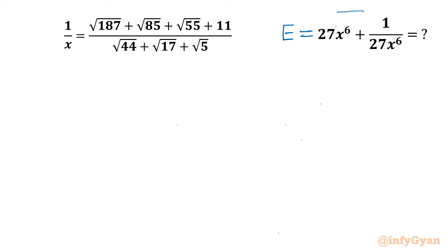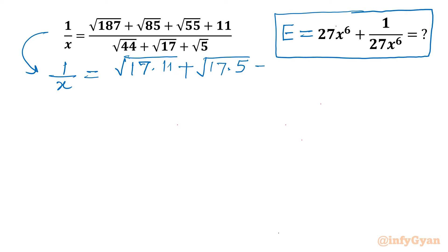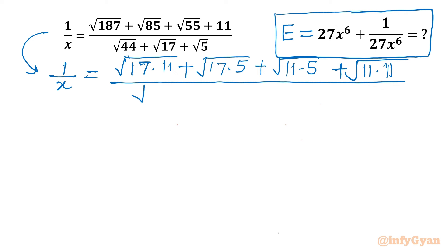Let me call it E, and the given equation is 1 over x. So let's get started with 1 over x itself. I will write the numerator as 187, which I can write as 17 times 11. 85 I can write as 17 times 5. 55 will be factorized as 11 times 5. And then 11 can be written as root 11 times root 11. The denominator I can write as 4 times 11, root 44, plus root 17, 15, plus root 5.